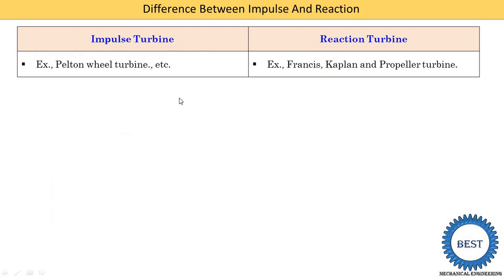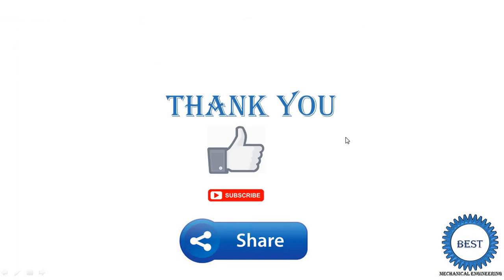The last point is examples. In an impulse turbine there is only one type, known as the Pelton wheel turbine. In reaction turbines there are two types: the Francis turbine and the Kaplan and propeller turbines. Thank you for watching this video. If you learned something, please like, subscribe, and share with your friends.